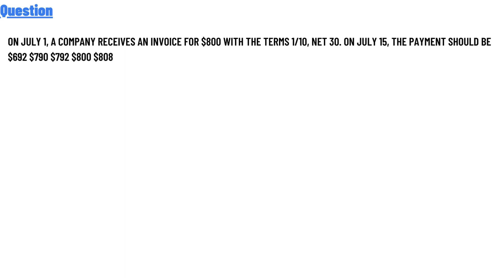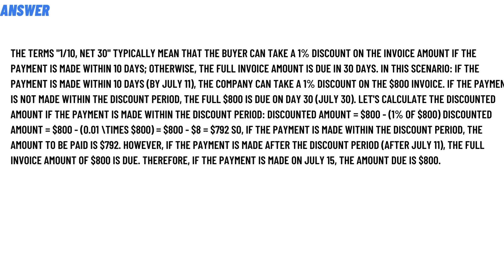The terms 1/10 net 30 typically means the buyer can take a one percent discount on the invoice amount if the payment is made within 10 days; otherwise the full invoice amount is due within 30 days.